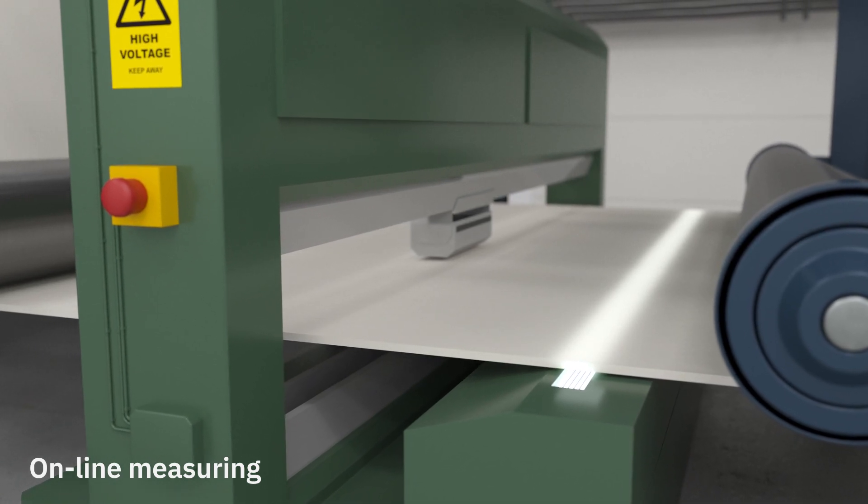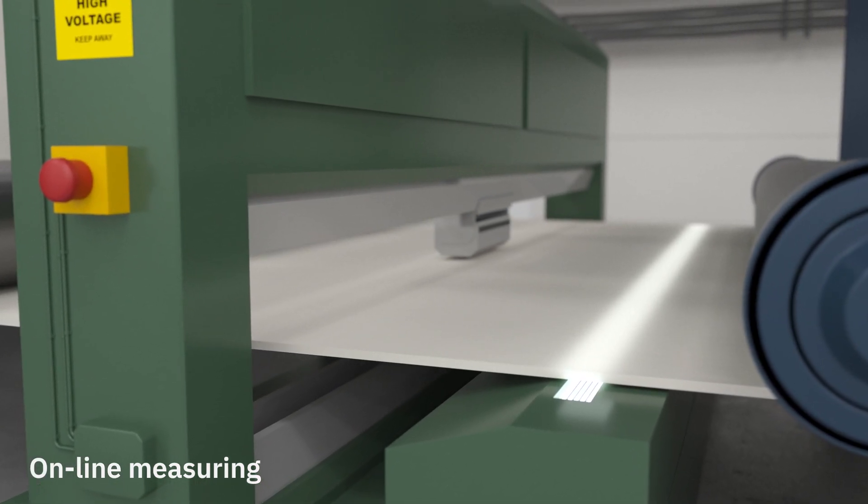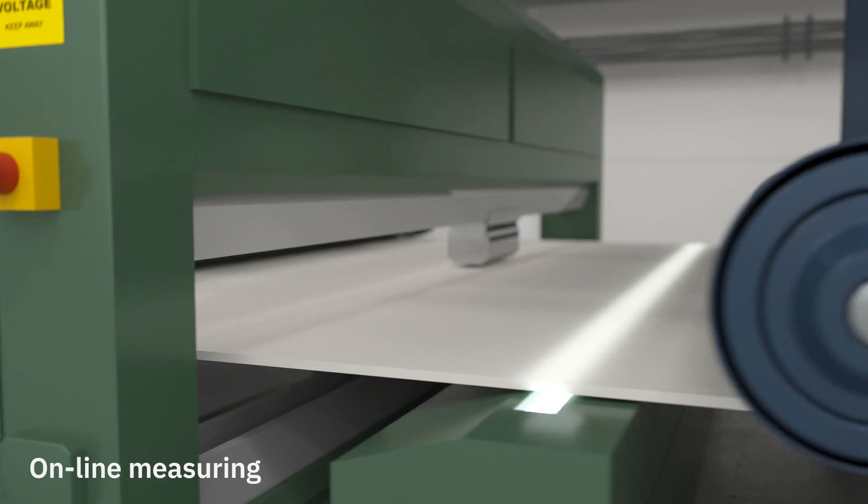A web inspection system detects holes and stains which can be patched or removed from the paper.